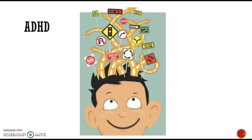ADHD — attention deficit hyperactivity disorder — is another DSM-5 category. It is usually treated with stimulants like Ritalin or Adderall. People with ADHD are easily distracted, may make careless mistakes, and seem disorganized. The core issue is trouble filtering sensory input and difficulty with selective attention. Onset is usually around age seven, and ADHD is more common in boys than in girls.